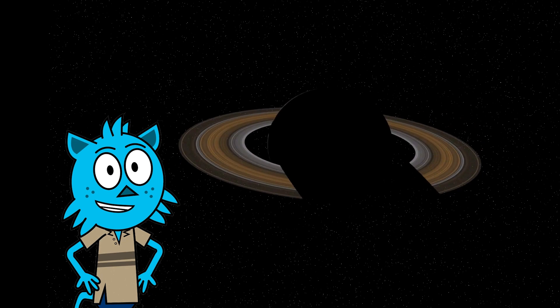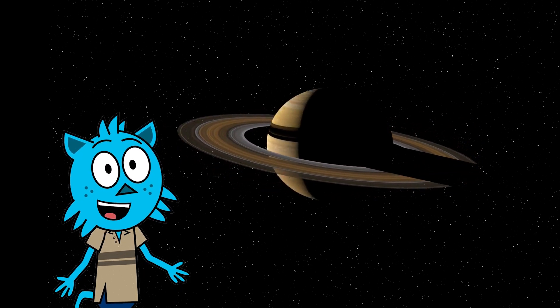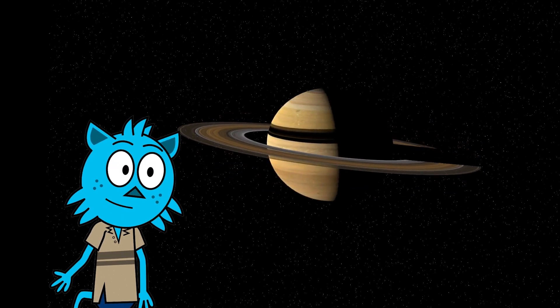Now, here's Saturn with its beautiful rings. It's like a cosmic jewelry box. Saturn's rings are made of ice and rocks, and they look stunning from far away.